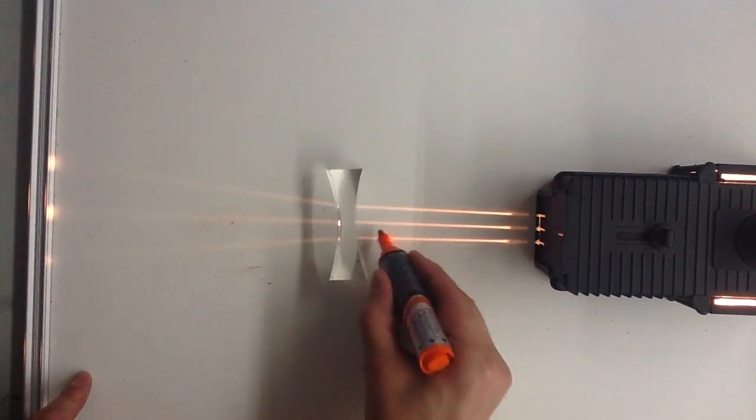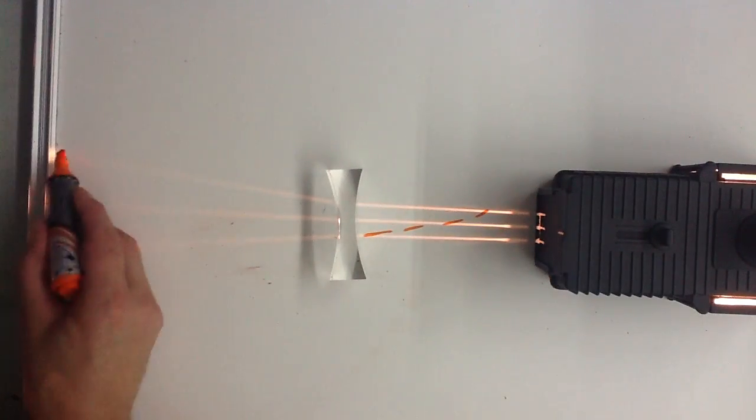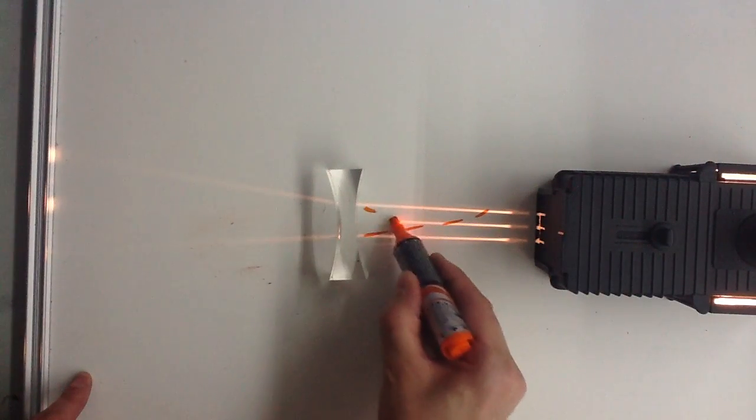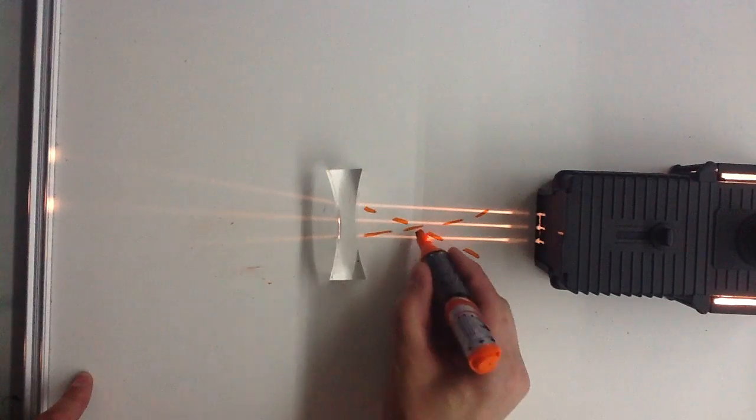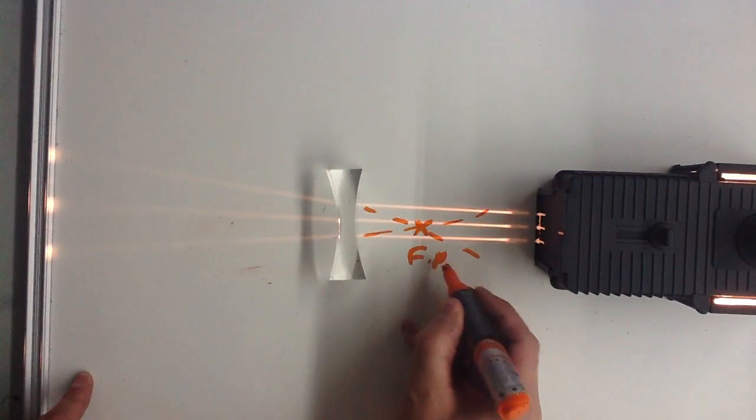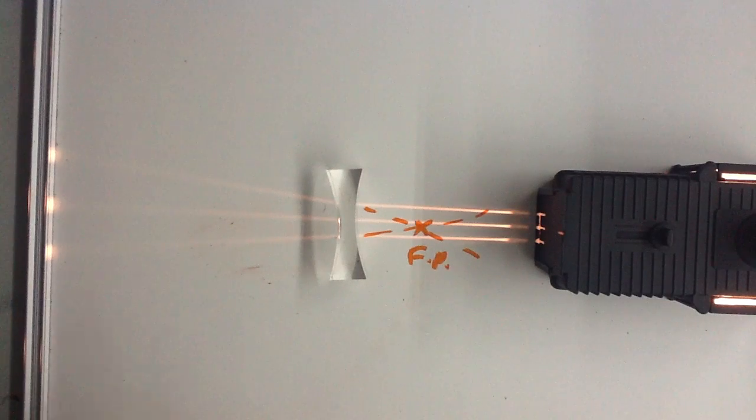This one here, if I continue the ray line back, goes back here somewhere. And this one here, if I continue that ray line back, will go back here somewhere. And where they intercept with their virtual lines just there, that will be the focal point for this lens.